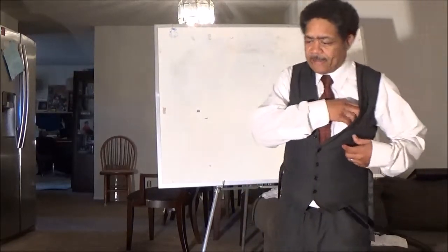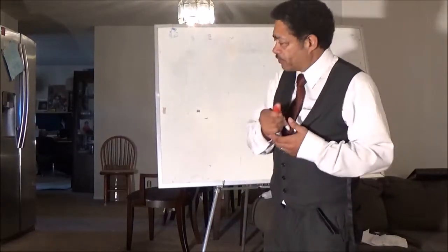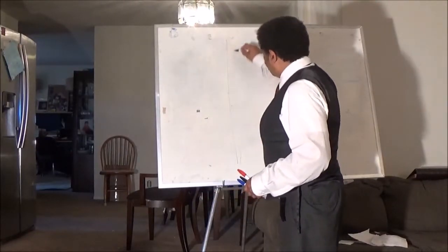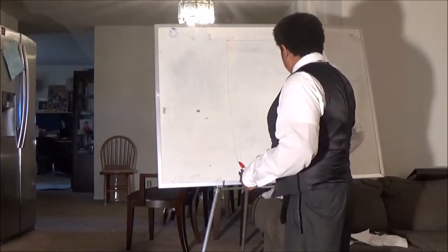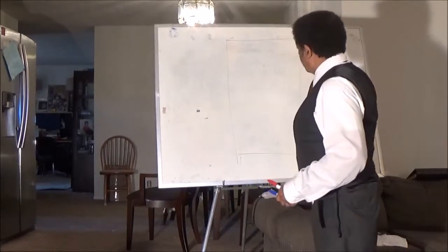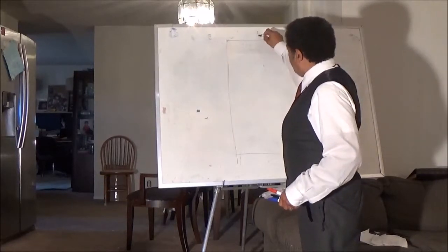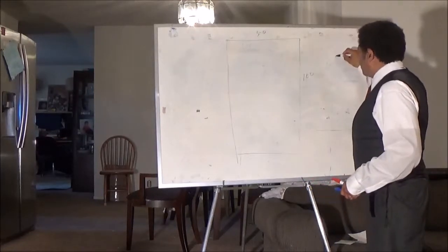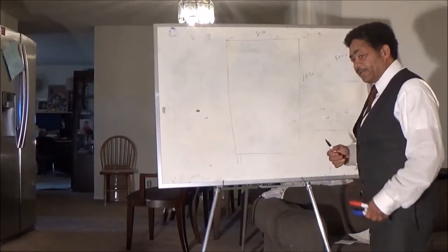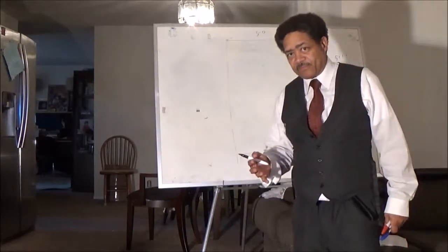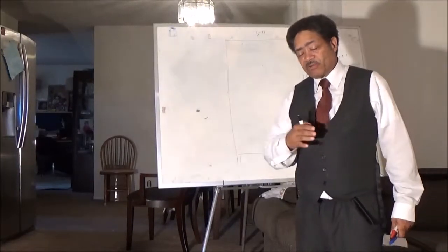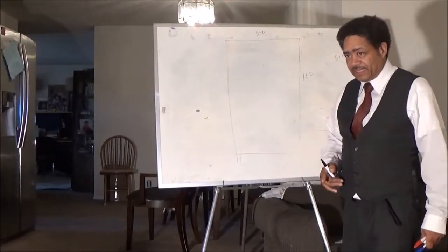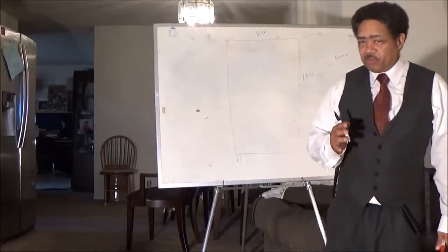To understand what it means to take up the cross, we need to understand a little bit about the Tabernacle of Moses. You remember the Tabernacle of Moses was a rectangular shape, 50 cubits by 100 cubits. Multiplying that, you would have 50 times 100, or 5,000. You remember that Jesus fed the 5,000. Actually there were 5,000 men, and he put them in rows of 50 and 100, which indicates an outer court.